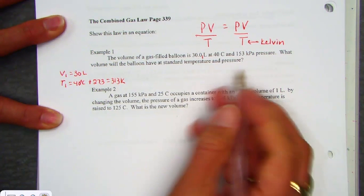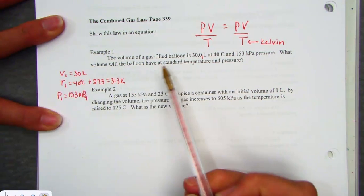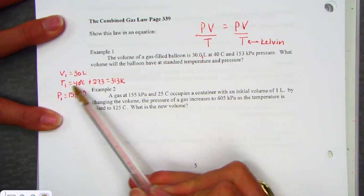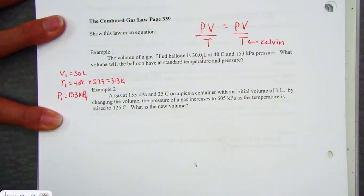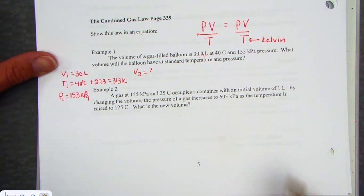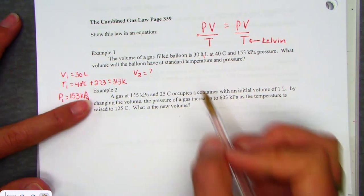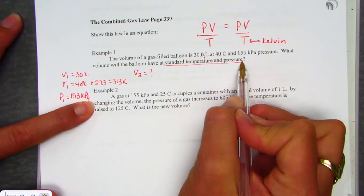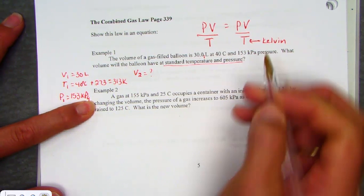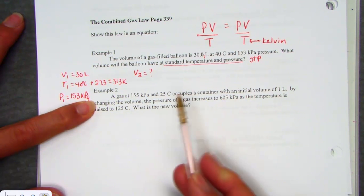And the pressure is assigned for us as 153 kilopascals. So my first sentence has given us V1, 30 liters, T1 in Kelvin, 313, and P1 is 153 kilopascals. We'd like to know what the new volume would be, so there's our target, V2, when the balloon has standard temperature and pressure. Even though these are words, standard temperature and pressure, they're actually numbers as well. STP could also be a way that we see that written in a problem.